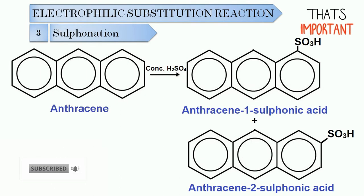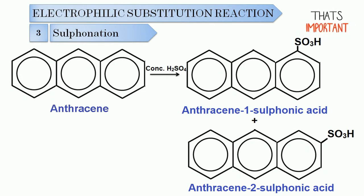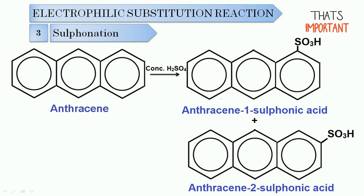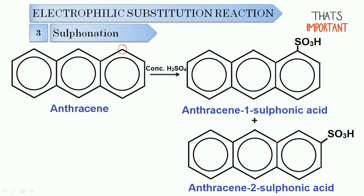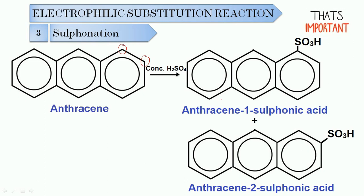The third reaction is sulfonation. Anthracene is treated with concentrated sulfuric acid, and again two products are formed. The first is anthracene-1-sulfonic acid, where sulfonation occurs at carbon 1. The second product is anthracene-2-sulfonic acid, where sulfonation occurs at carbon 2. So here again, two products will be formed.